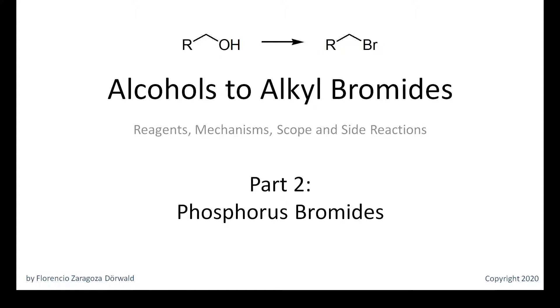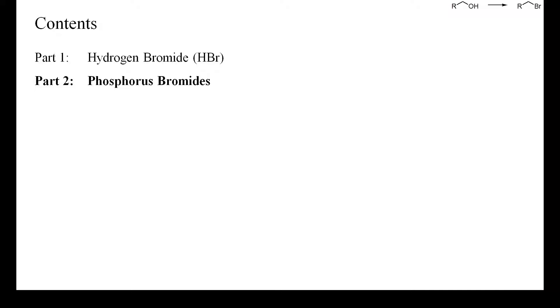Hi, welcome to part 2 of my video playlist about the best methods to convert alcohols into alkyl bromides. This presentation is about the use of reagents with phosphorus-bromine bonds as deoxybrominating reagents.